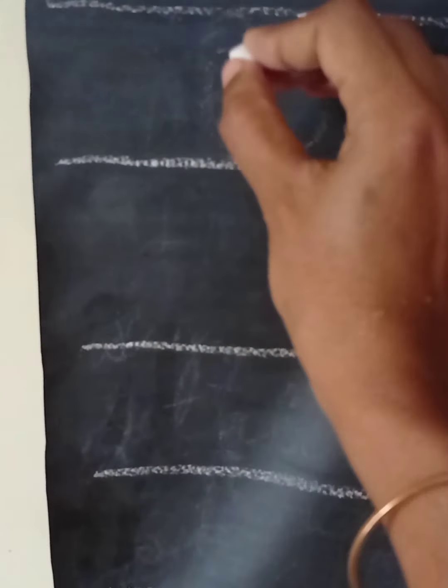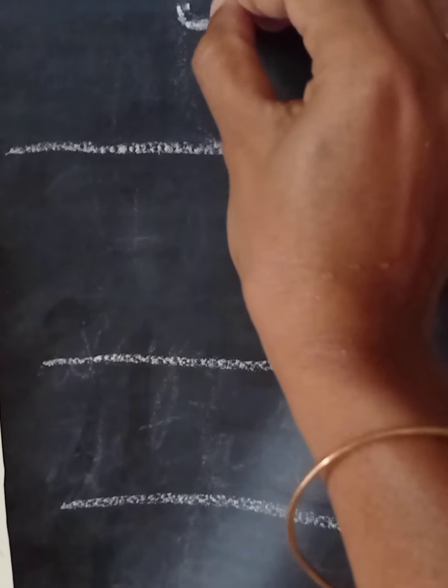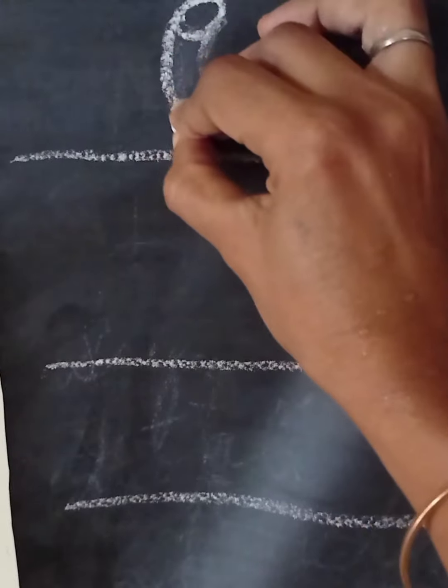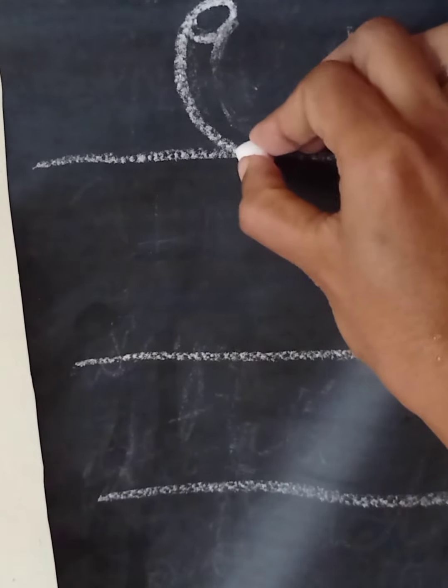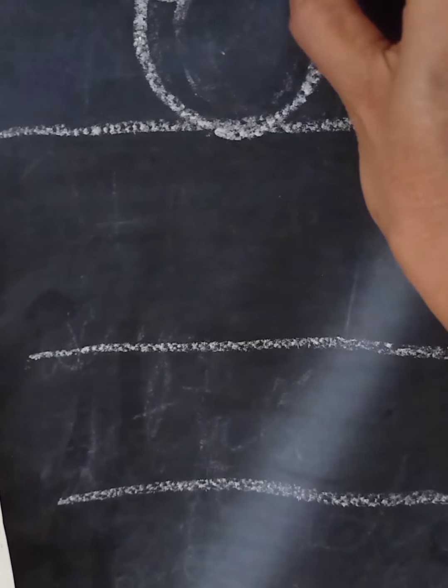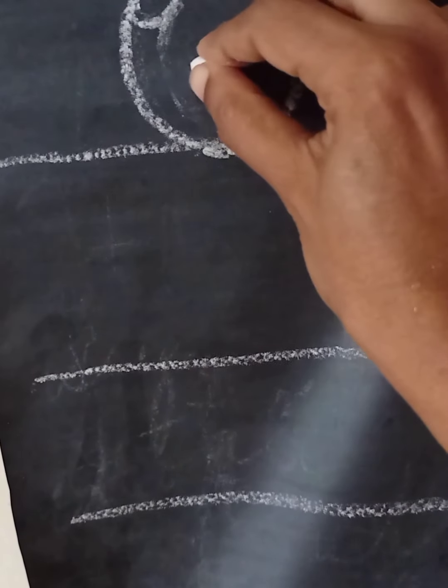The first letter would be A. A as in Arasa. Arasa meaning king. So this is the first alphabet in Kannada.